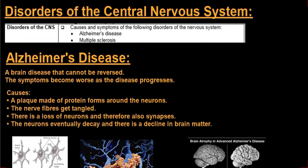In this video, we'll be looking at disorders of the central nervous system and receptors. The two disorders we will be looking at are Alzheimer's disease and multiple sclerosis, and we'll also be looking at the causes and the symptoms of these two disorders.